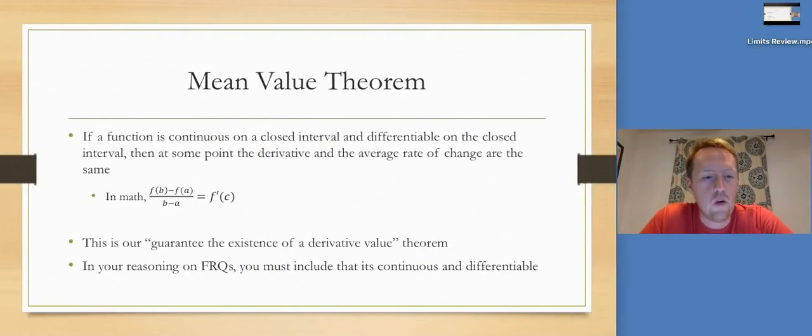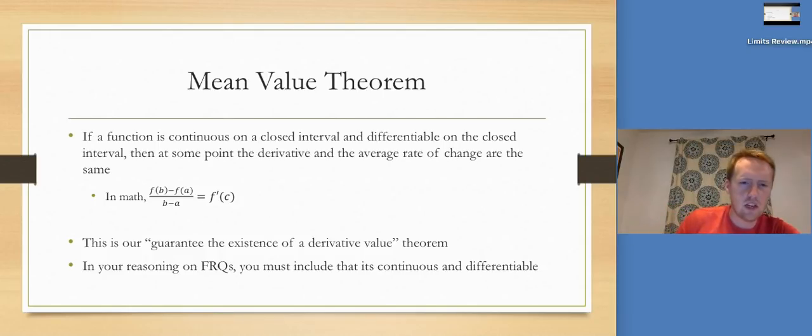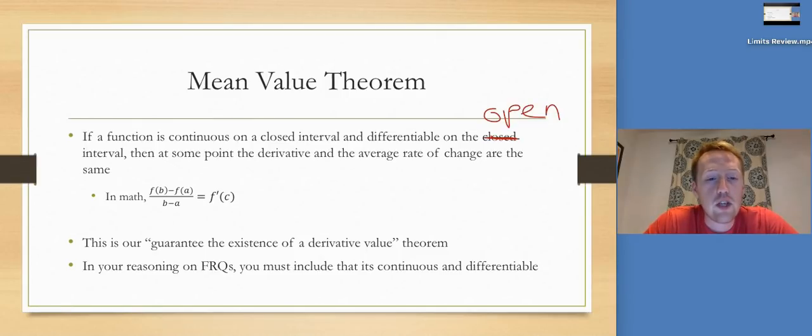We're going to look at the mean value theorem, and then we're going to wrap this video up. If a function is continuous on a closed interval and differentiable, sorry, the function needs to be continuous on the closed interval and differentiable on the open. Sorry about that. Open interval. Then at some point, the derivative and the average rate of change are the same. In math terms, that means F of B minus F of A over B minus A is equal to F prime of C. This is our guarantee the existence of a derivative value. Similar idea to the intermediate value theorem. We're guaranteeing at some point the derivative and the average rate of change are the same.